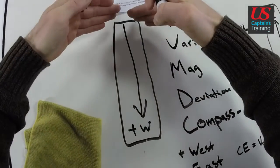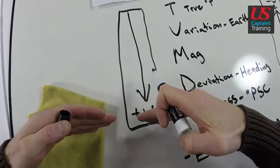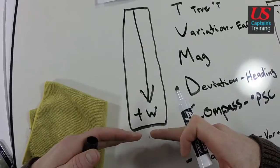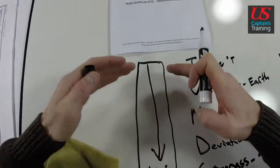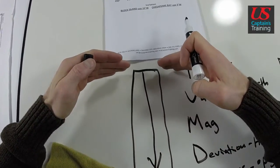And a more simplified drawing, if you need a memory aid, is just when you're going from true to compass, add west. And then you know you do the opposite to east. And then you know when you go up, you do the opposite. You add east, subtract west.